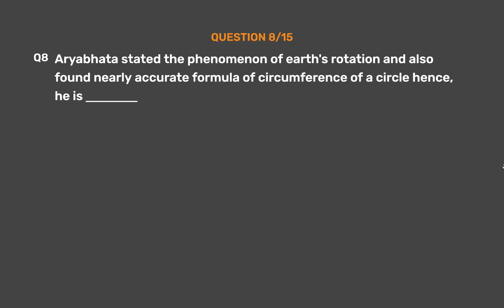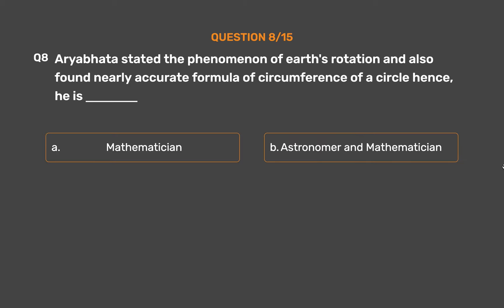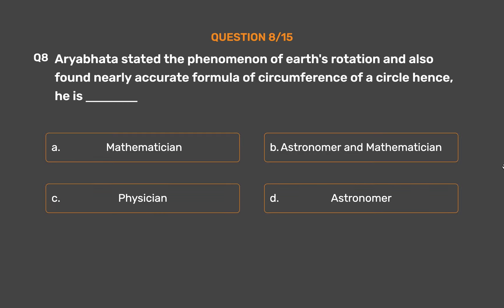Question No. 8. Aryabhata stated the phenomenon of Earth's rotation and also found a nearly accurate formula for the circumference of a circle. Hence, he is: Option A: Mathematician. Option B: Astronomer and Mathematician. Option C: Physician. Option D: Astronomer.